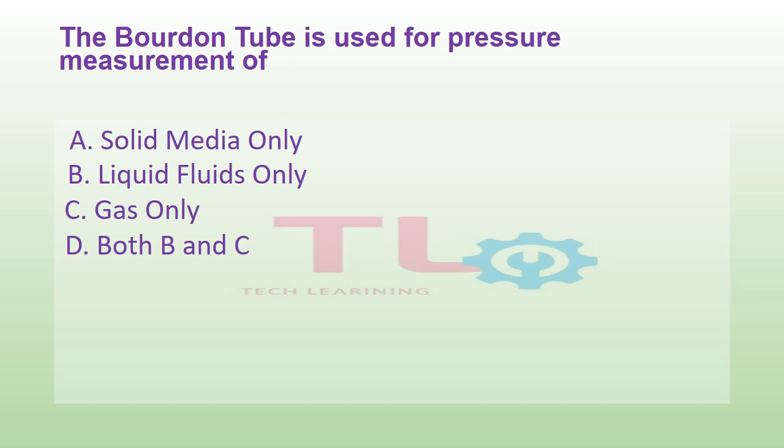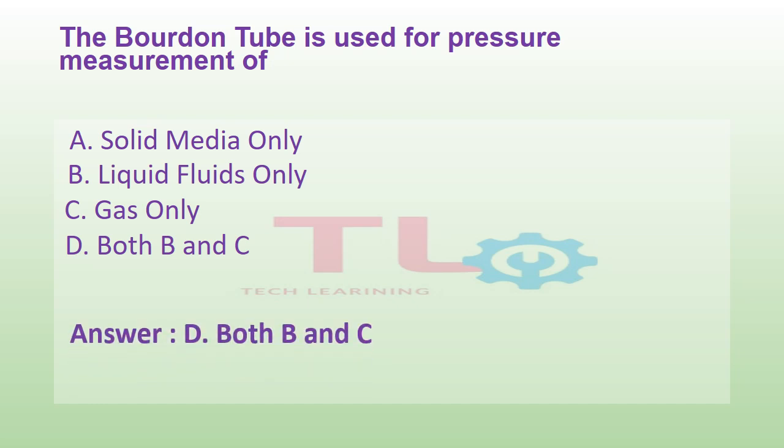The Bourdon tube is used for pressure measurement of: Option A: solid media only. Option B: liquid fluids only. Option C: gas only. Or option D: both B and C. And the answer is option D, both B and C.